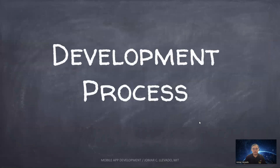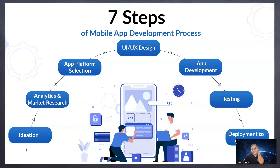The mobile application development process consists of seven steps: ideation, analytics and market research, app platform selection, UI and UX design, app development, testing, and deployment.